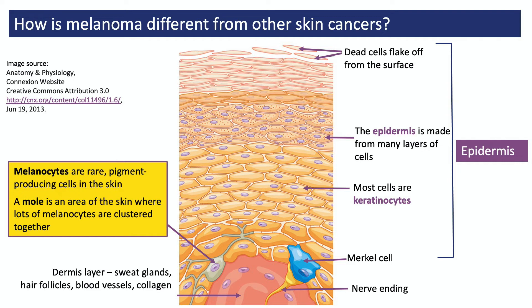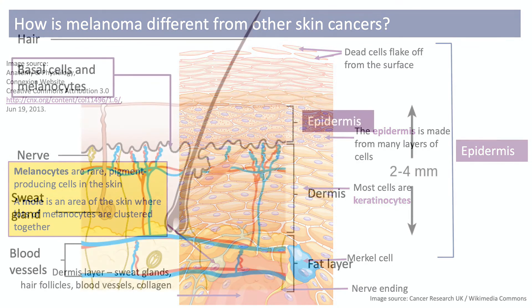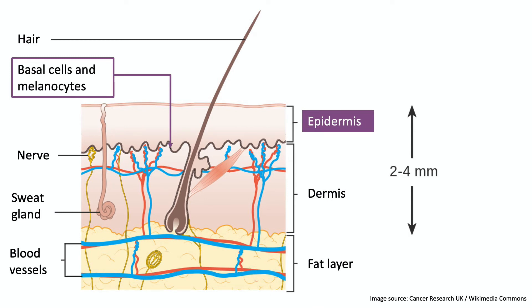Melanocytes are rare pigment-producing cells that share pigment with the cells around them. A mole is an area of the skin where there's an unusually high number of melanocytes clustered together. This is another illustration which contains a less detailed picture of the epidermis, but you can now see more detail of the dermis and the layer underneath. It shows a hair follicle rooted in the dermis but protruding up through the layers of the epidermis, and you can see a nerve winding its way up through the layers. The melanocytes are barely visible — they're found scattered about in the basal layer that separates the epidermis and dermis.